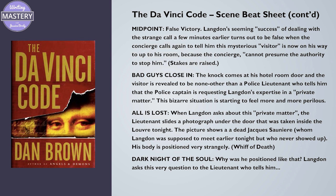Beat nine: Dark Night of the Soul. Why was he positioned like that? Langdon asks this very question to the lieutenant, who tells him in beat ten: Break into Three — Monsieur Saunier did that to himself. And that is the end of the chapter. Ending a chapter or scene on the All is Lost or the Break into Three is an effective and common strategy, because those are the beats that form a cliffhanger or a question to be answered, leading to the next scene when the answer becomes the new scene's setup.